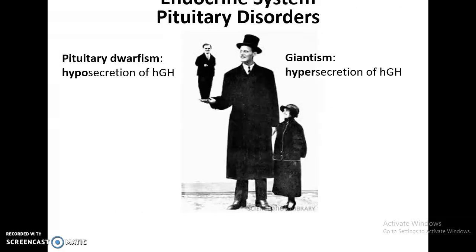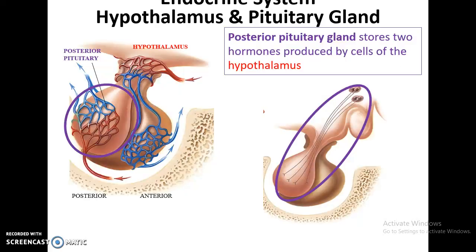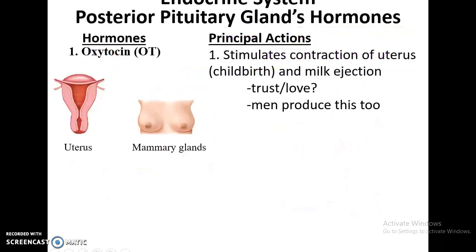If someone has pituitary dwarfism, that means they secrete low levels of human growth hormone and do not achieve the height expected of them. Gigantism is a hypersecretion of human growth hormone, causing them to become much taller than expected. The posterior pituitary gland stores two hormones produced by the hypothalamus, which deposits those hormones directly into the pituitary gland by specialized cells related to neurons.